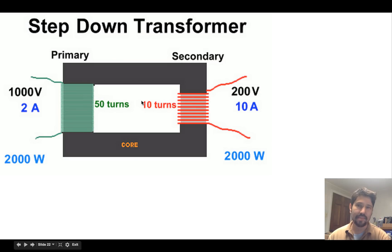On our step-down transformer we have fewer coils on the secondary side and more coils on the primary side, so our voltage might go from a thousand volts down to 200 volts. It decreases, but our current which is at 2 amps goes up to 10 amps.